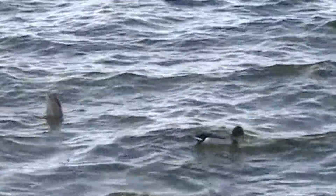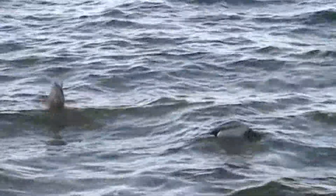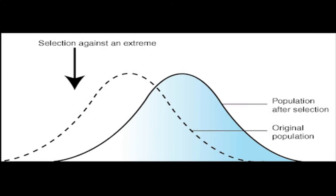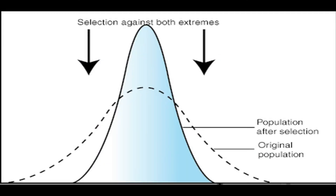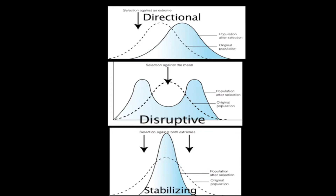Natural selection can contribute to evolution in many ways, but we will be focusing on three: directional selection, disruptive selection, and stabilizing selection. Let's take a playful look at each of these modes of selection in the context of our own population here at UW Madison.